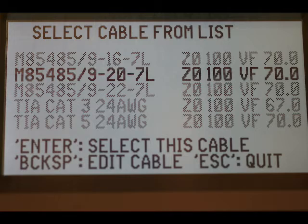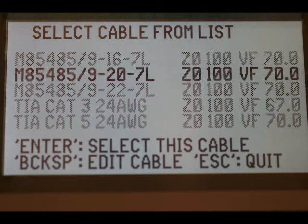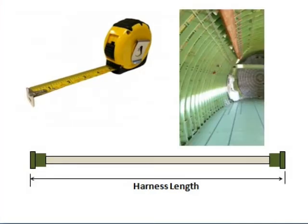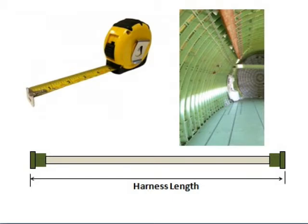The following slides are tips on locating faults in a wiring harness with uncertain velocity. Method 1: try to find the velocity by measuring the harness's distance with a tape measure or counting aircraft frames between two measuring points. Then select the cable menu and use velocity search to let the TDR compute the velocity based on the harness's length.